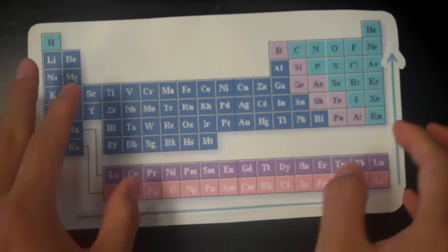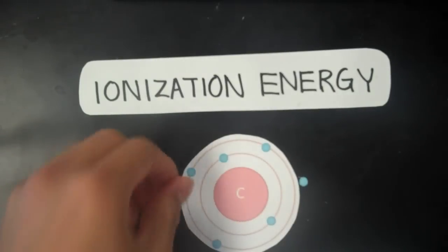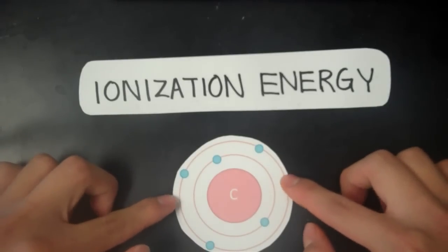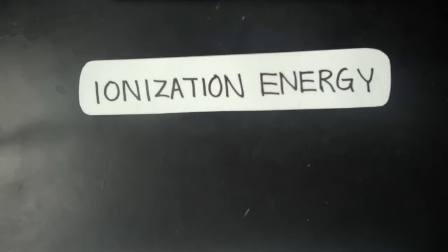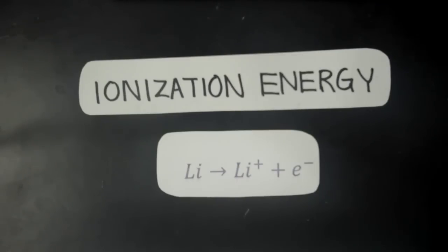So now let's explain some of the key concepts and terms. First of all, what is ionization energy? Ionization energy is the amount of energy that is required to remove an electron from the outermost shell of an atom. As you can see in this diagram, the ionization energy is the amount of energy required to remove an electron from this carbon atom. In an equation, a neutral atom will decompose and lose an electron, producing an ion as product. As you can see in this equation, the lithium atom will ionize to form a lithium ion, and the ionization energy is the energy required to remove that electron.